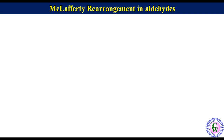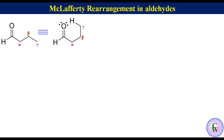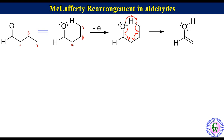McLafferty fragment in aldehydes. Let's take the example of butanal. These are alpha, beta, and gamma carbons. We can see that the gamma carbon has hydrogen. We can reorient the molecule. Removal of the non-bonding electron gives this radical cation, also called the parent ion. Abstraction of gamma hydrogen by the oxygen radical, formation of a pi bond between the beta and gamma carbon by breaking the sigma bond between alpha and beta carbon, and breaking of the pi bond of carbonyl leads to the generation of the McLafferty fragment and expulsion of an ethylene molecule. The m/z value of the McLafferty fragment is 44.